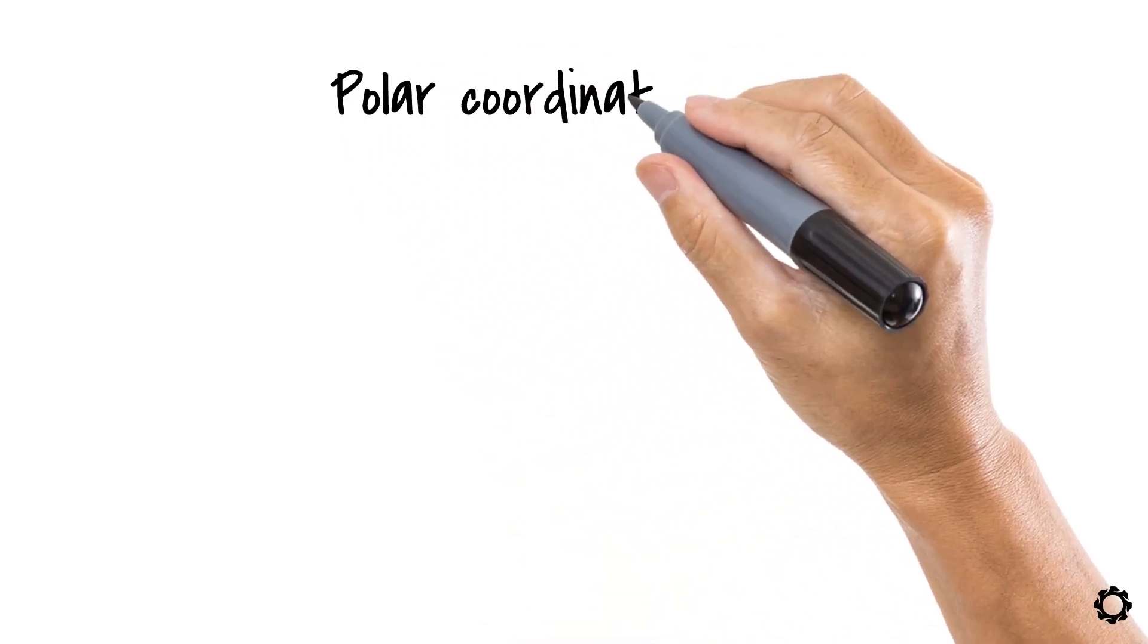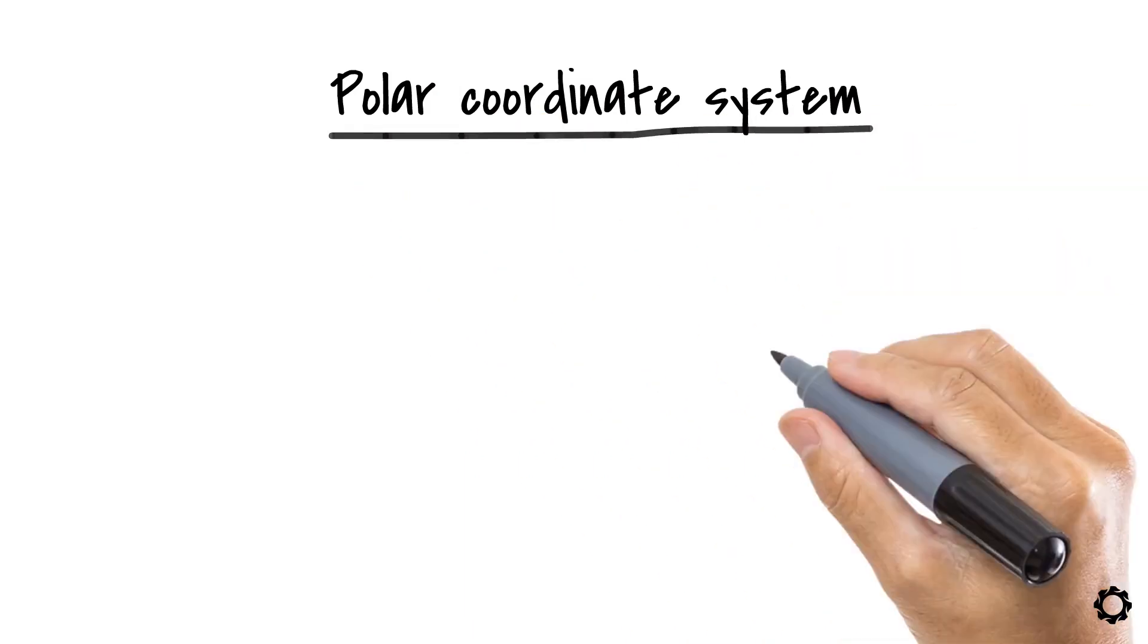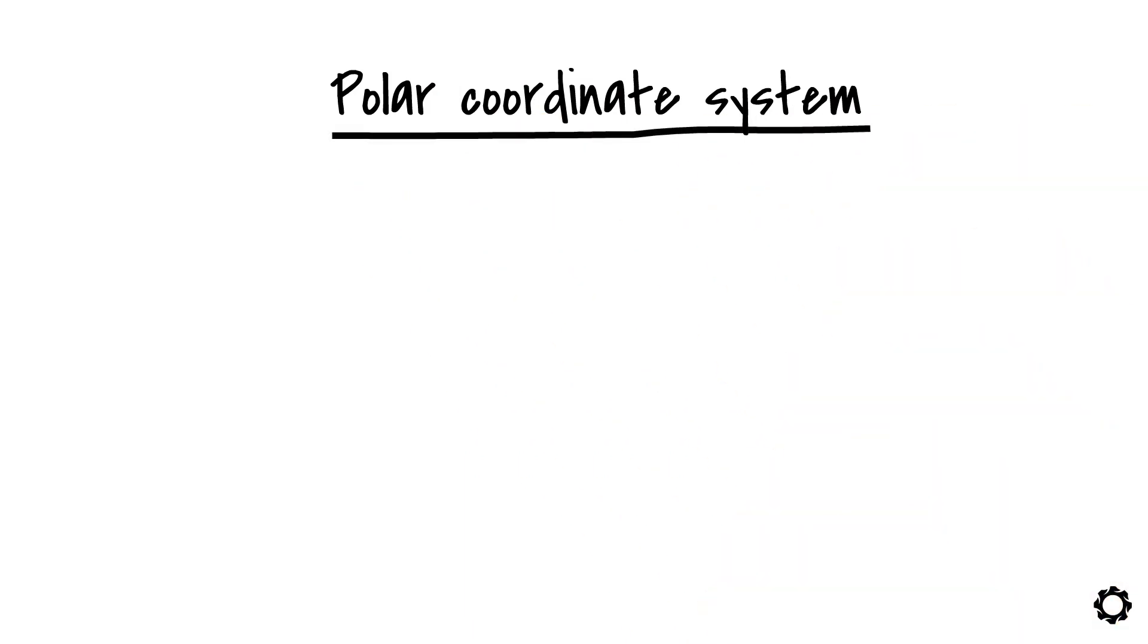Now in the case of polar coordinate system, things are a little bit different. Polar coordinate systems can only represent points in two dimensions, where each point can be represented by a distance from a reference point and an angle from a reference direction. You'll see what I'm talking about. Let's verify the conditions.